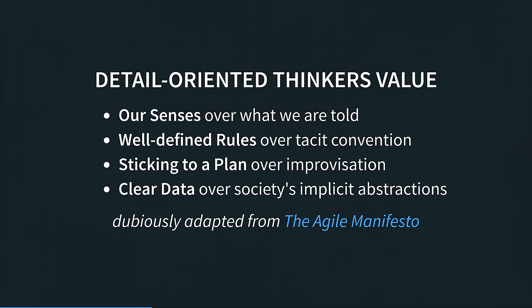Detail-oriented thinkers value our senses over what we are told, well-defined rules over tacit convention, sticking to a plan over improvisation, and clear data over society's implicit abstractions. That is, while there is value in the items on the right, we value the items on the left more. This is why emotions can sometimes come slower to us. We're paying attention to the million details around us, and sometimes this causes us to miss the big picture. You often can't simply tell us what to do. We'd prefer it if you also tell us the details of what and why from the bottom-up.